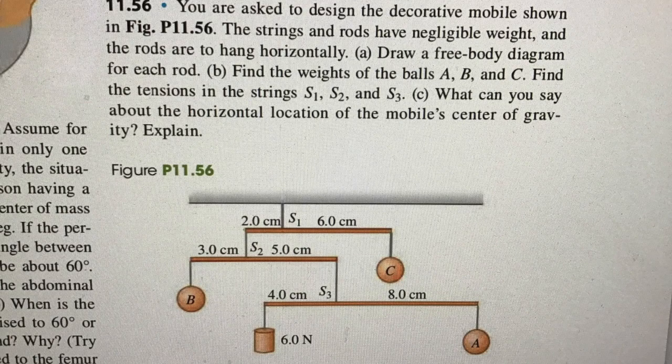In this problem we're looking at equilibrium — forces and torques in equilibrium. We're asked to design a decorative mobile shown in the figure, and the strings and the rods are treated as having negligible weight, and the rods are going to hang horizontally. We want to draw a free body diagram for each of the rods, find the weights of the balls labeled A, B and C, find the tensions in strings S1, S2 and S3, and determine the horizontal location of the mobile's center of gravity.